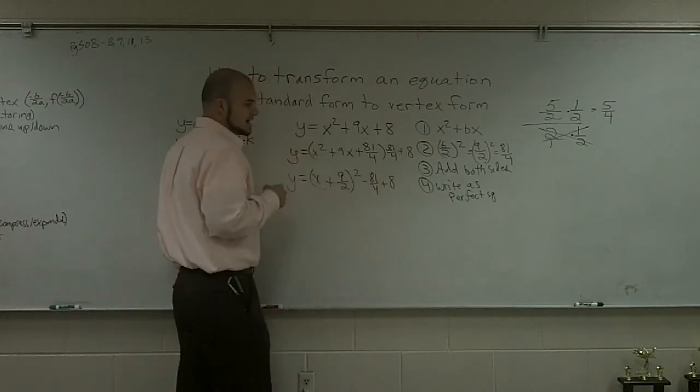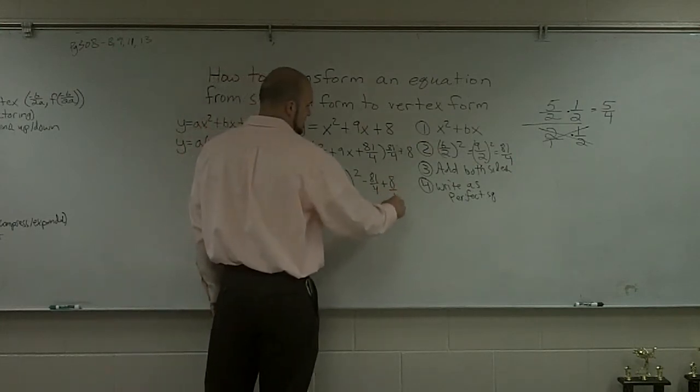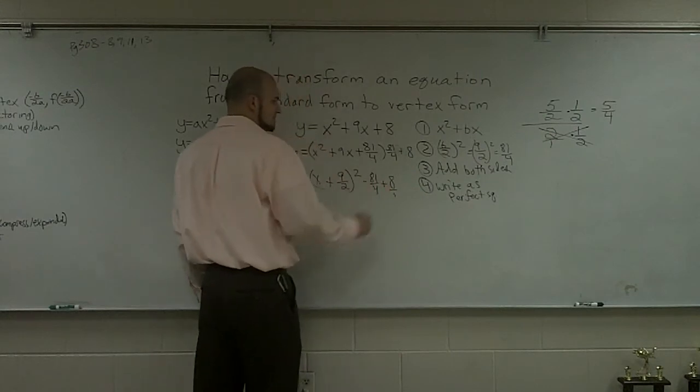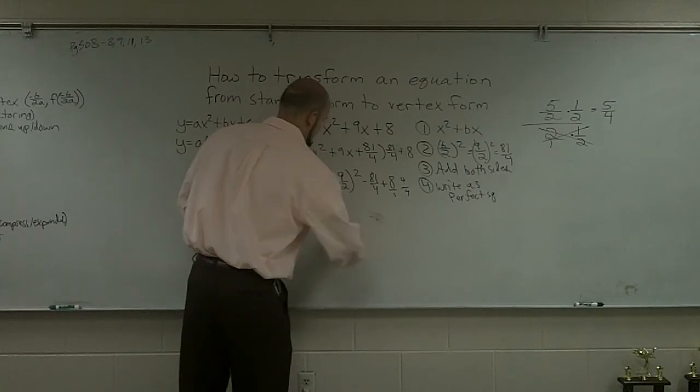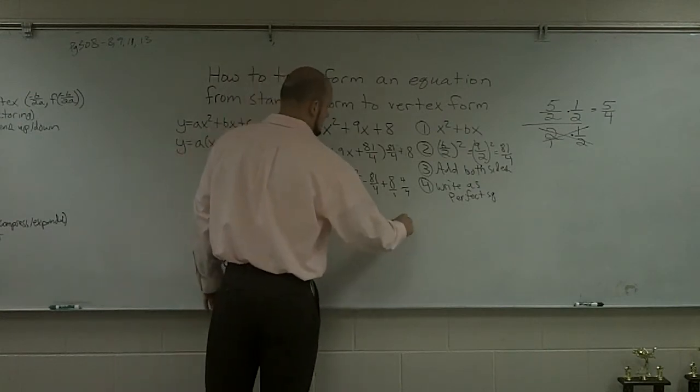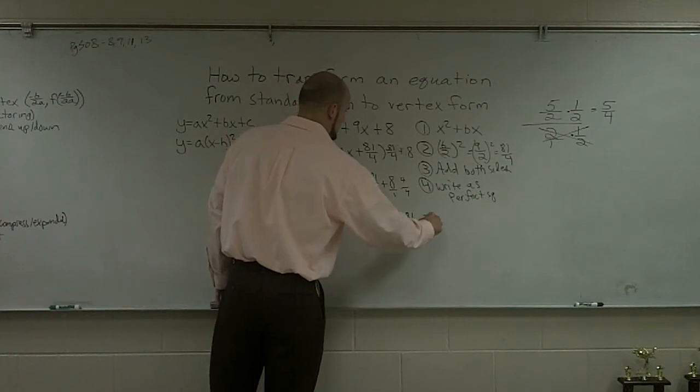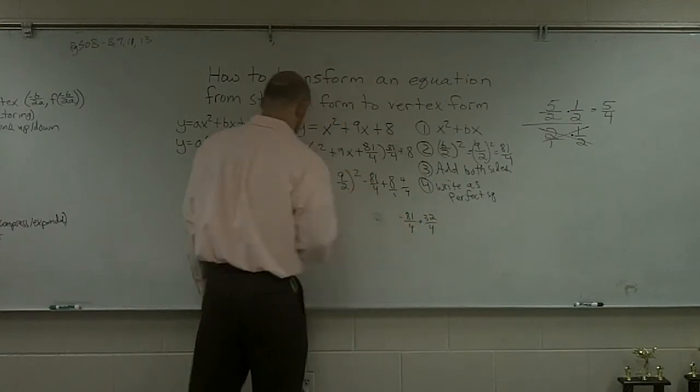To add these, I have to have them in the same denominator. So I'm going to put that over 1 and multiply it by 4 over 4. So I have negative 81 over 4 plus 32 over 4.